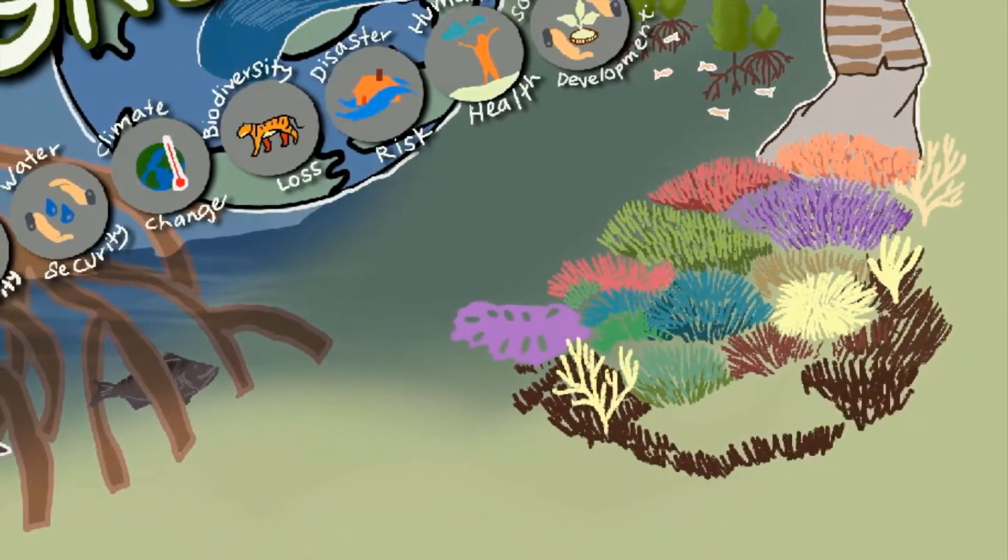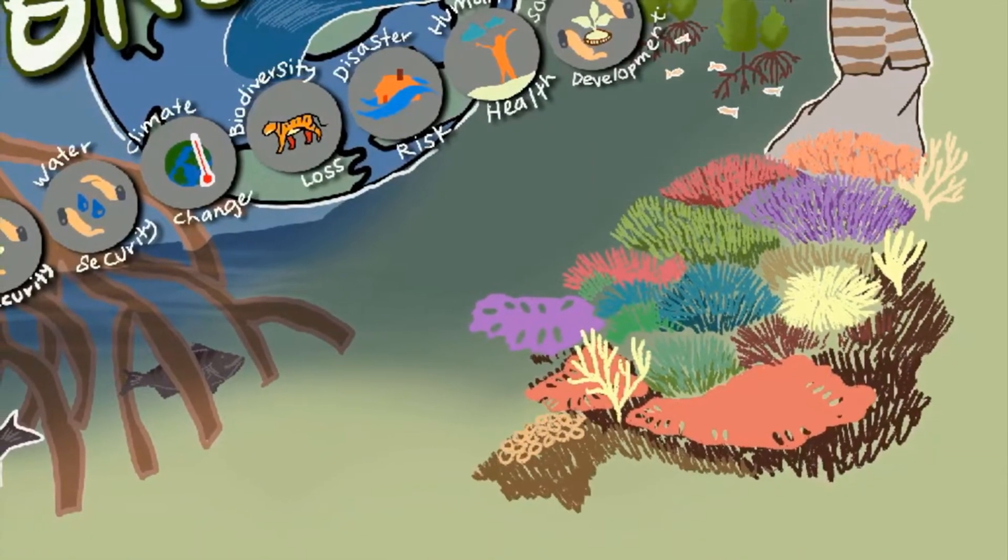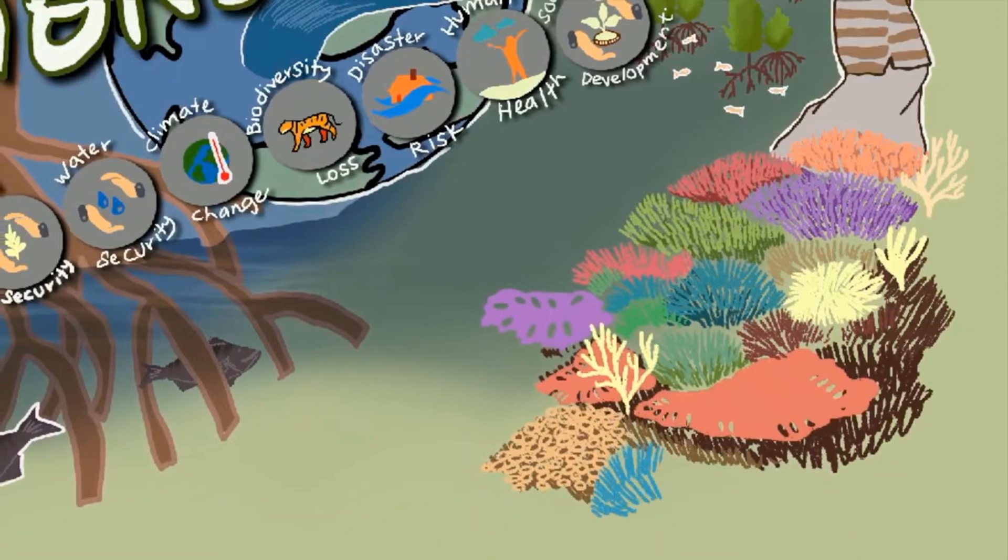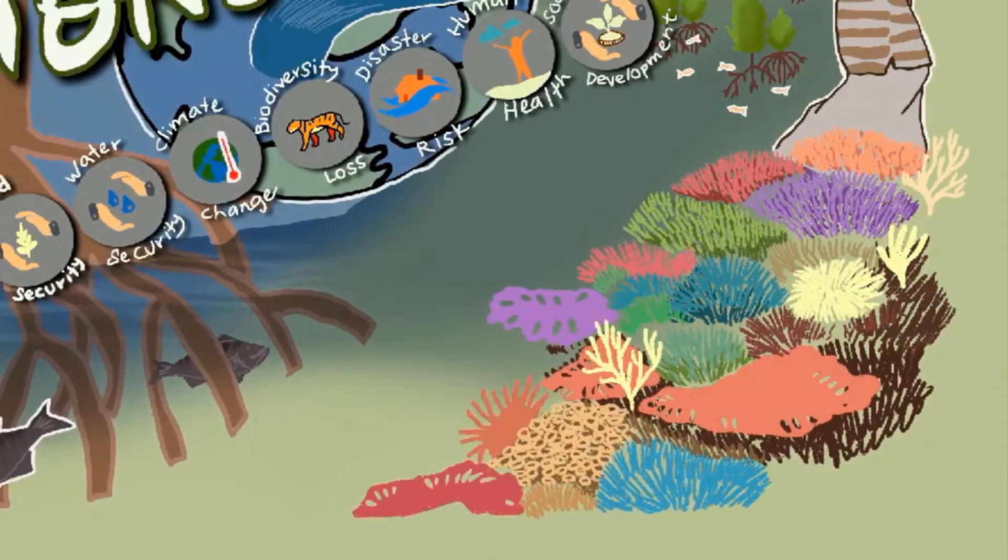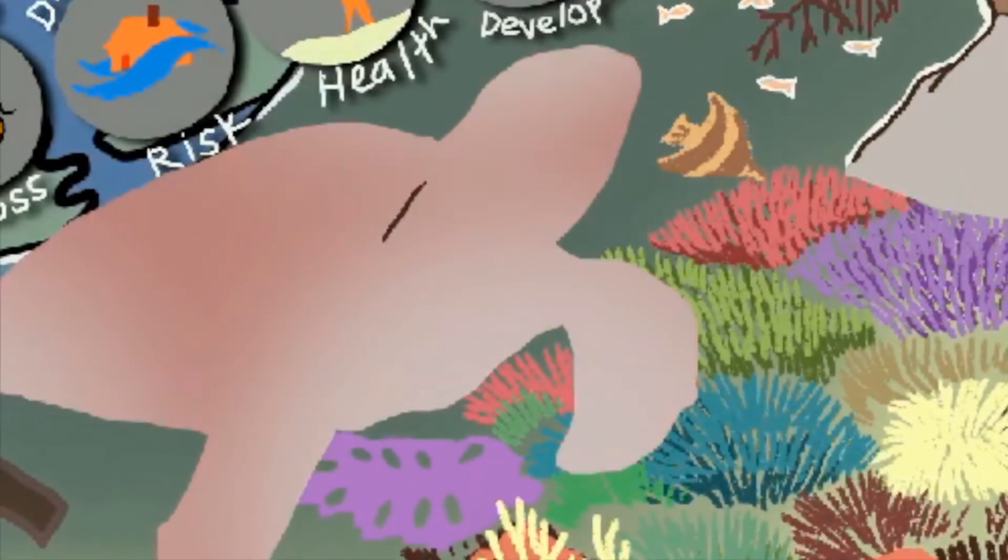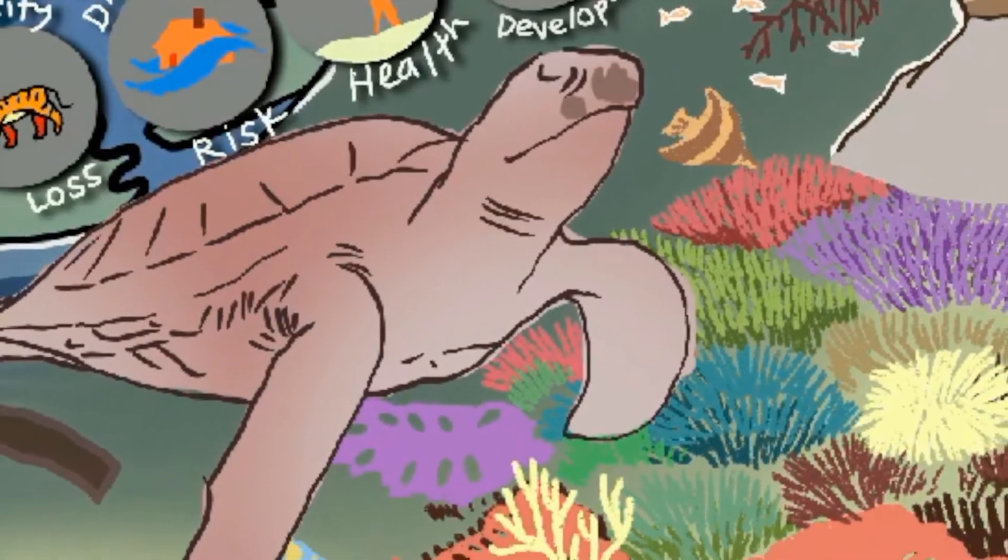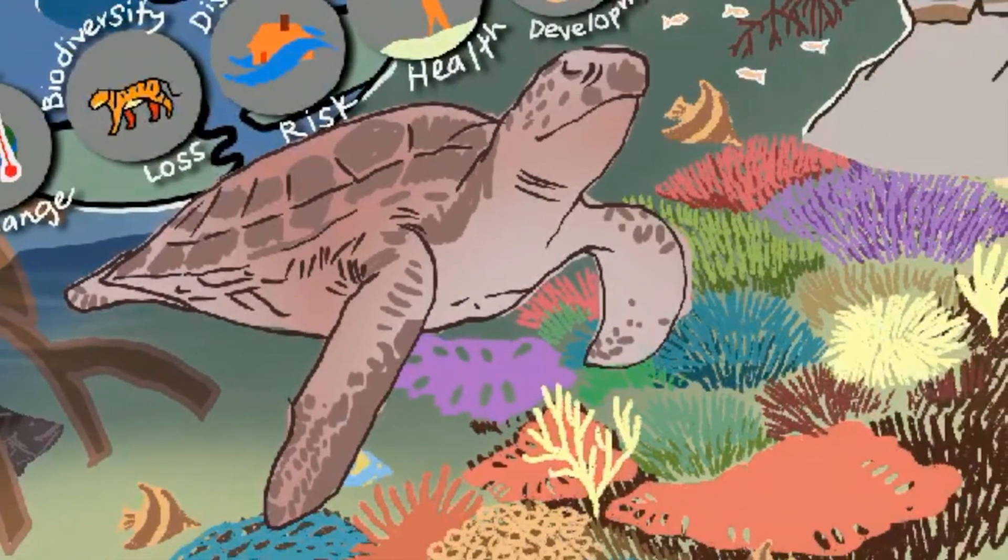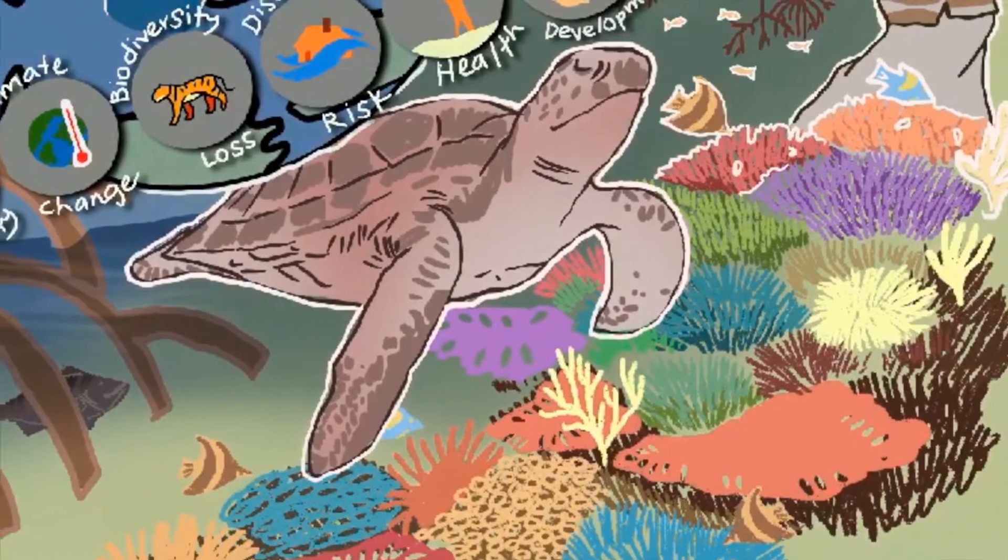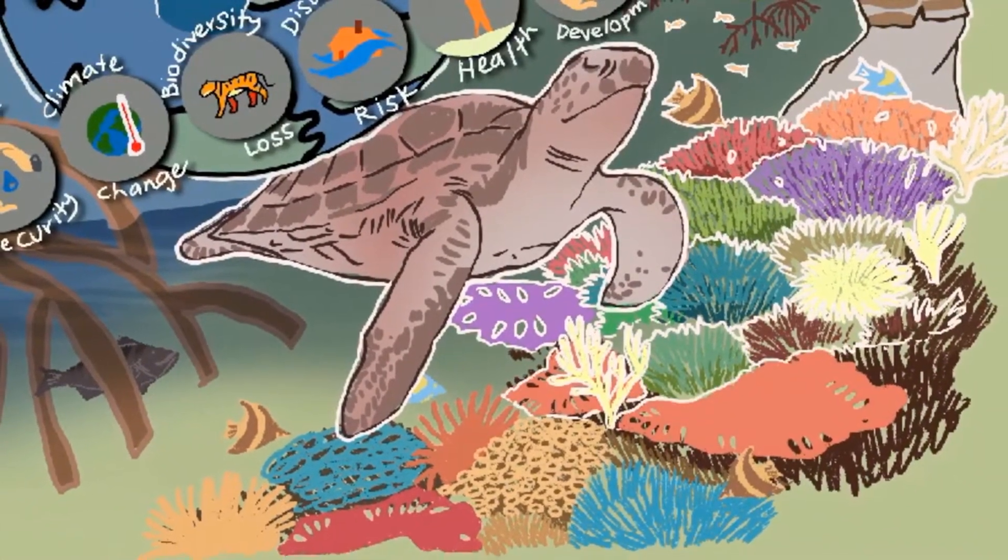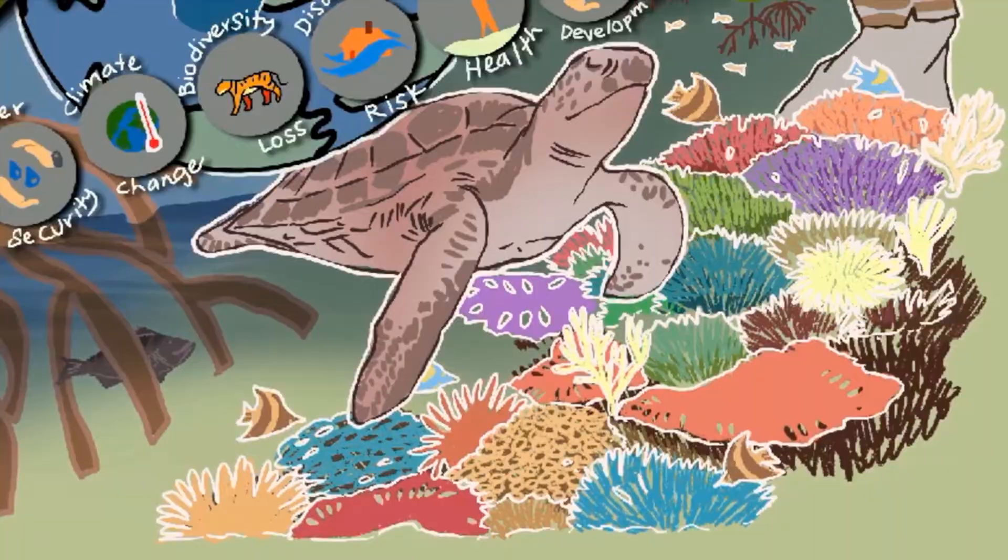WWF Malaysia also supports authorities in the Tun Mustapha Park to implement coral restoration strategies through the principle of co-management, which is working with communities. Healthier, more diverse reefs sustain dive tourism, safeguarding local livelihood, supplying foods and improving climate resilience through the protection of coastal areas from erosion.